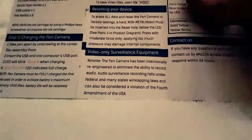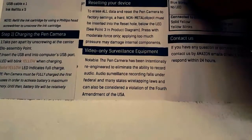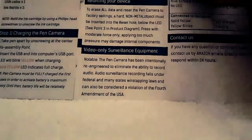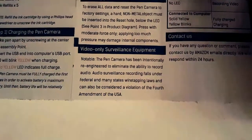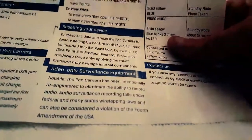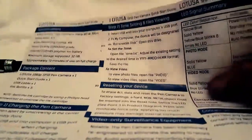It says here, note, it's a video only surveillance equipment. The pen camera has been intentionally re-engineered to eliminate the ability to record audio. Audio surveillance recording falls under federal and many states wiretapping laws and can also be considered a violation of the fourth amendment of the USA. That's a bit disappointing, but if this thing truly does 1080p video at 30 frames per second, then I will still be very satisfied because that is tremendous quality for such a small camera.